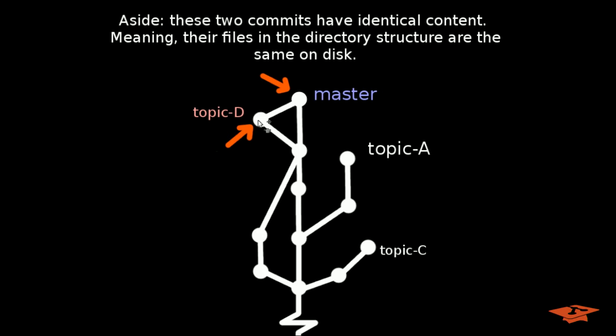It's worth pointing out here that these two commits actually have identical content, meaning the files in the directory structure are identical. If you were to check out from this commit to this commit or diff between them, you're going to get the exact same file state, meaning no differences between these two states. If that's not immediately clear to you, think about it this way.